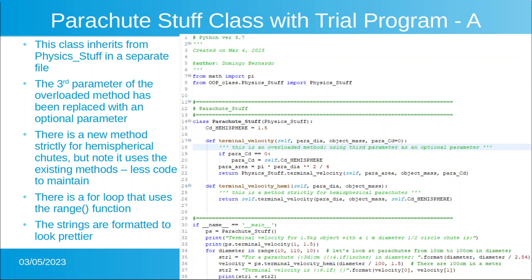The third parameter of the overloaded method has been replaced by an optional parameter. How do I know that? Because now it says para_cd equals zero. There is a new method strictly for hemispherical chutes, but realize or note that it doesn't use any new code, it just uses the existing code. And then there is a loop that uses the range function.